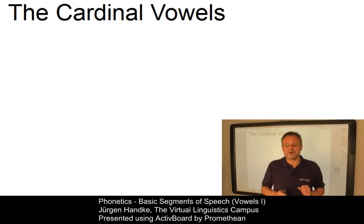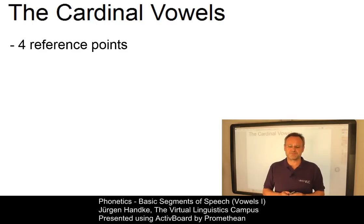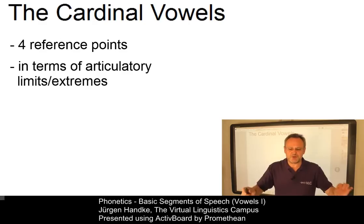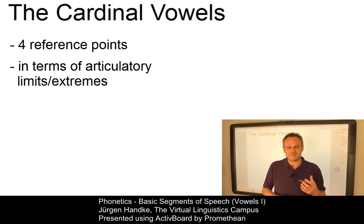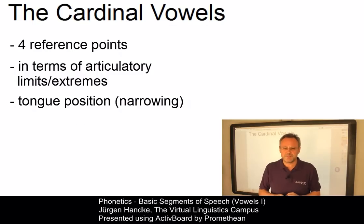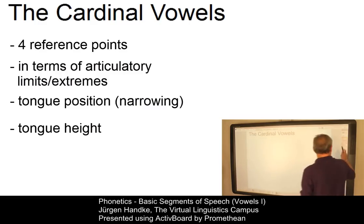The cardinal vowel chart defines four reference points in purely articulatory terms, representing the extreme limits of possible vowel quality. These limits depend on the tongue position — that is, where in the mouth the tongue creates some sort of narrowing — and tongue height. Hence, we can define four extremes.